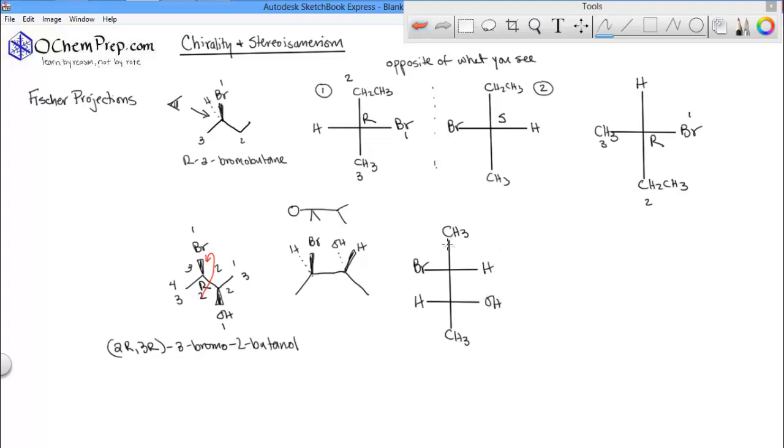Let's double check that we have the same configuration. This is carbon one, the bromine is one, the bottom is number two, methyl is number three. We see S, but the H is coming out, so it's the opposite of what we see, so this is indeed R. Let's do the one with the alcohol: one to two to three. Again, we see S, but it's the opposite of what we see because the H is coming out. So this is R.